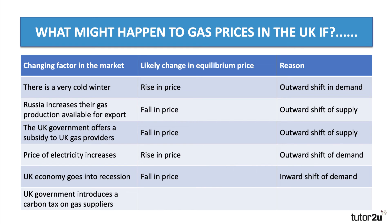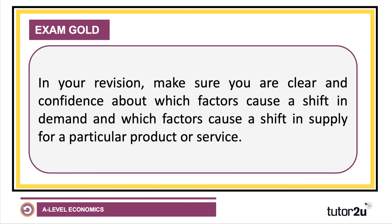Factor six: the UK government introduces a carbon tax on gas suppliers — perhaps as part of their commitment to climate change policies and cutting CO2 emissions. A new carbon tax would normally increase the price of gas, because a tax adds to the costs of suppliers and therefore causes an inward shift of supply.